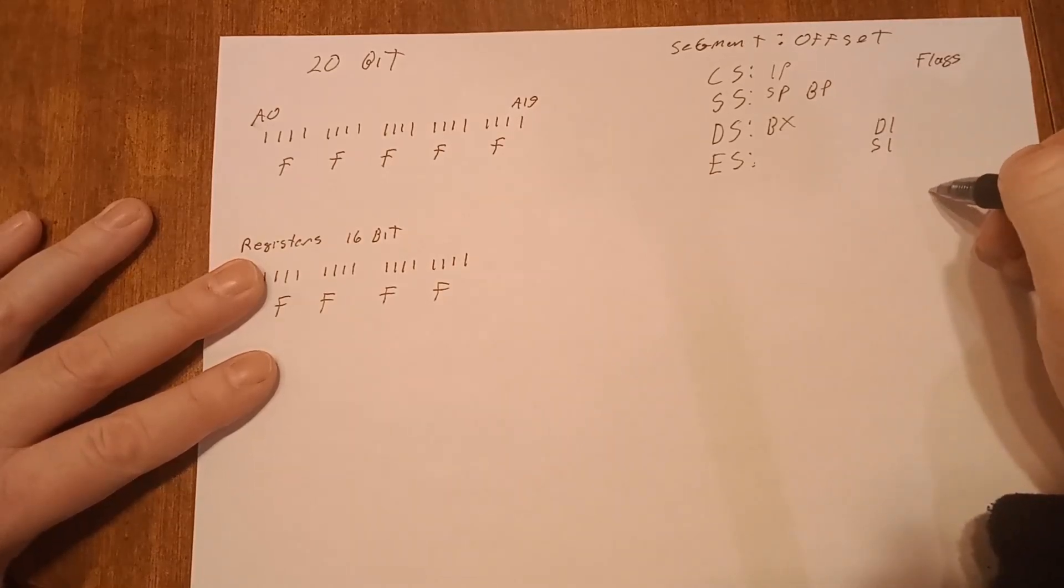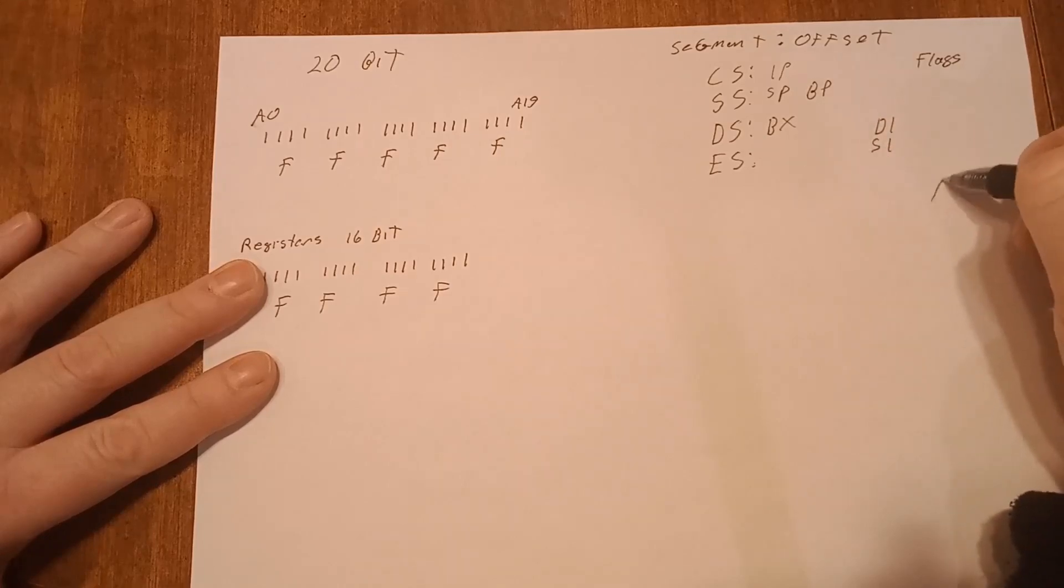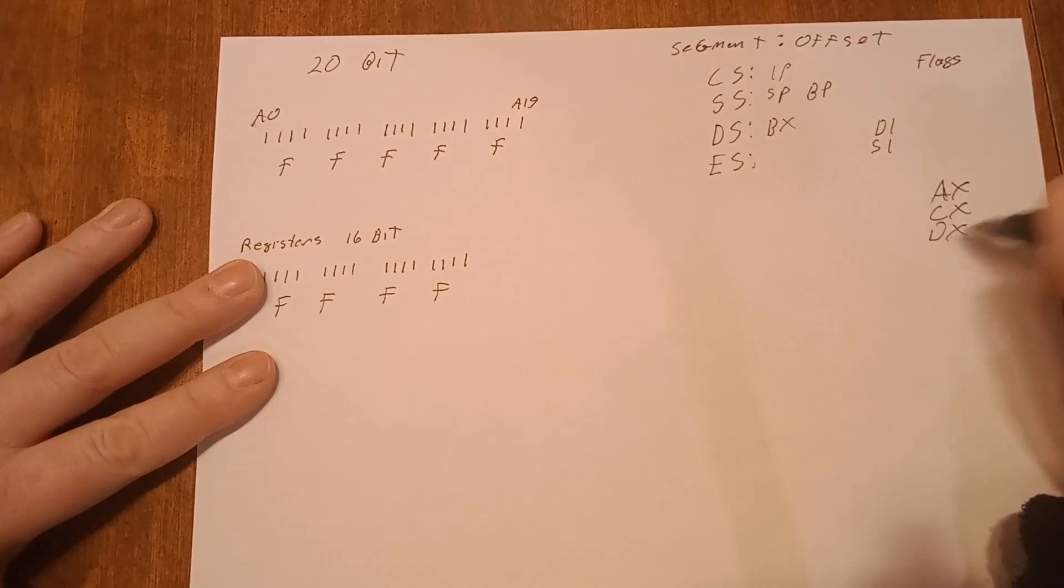The AX, we already got BX, so CX and DX. And these are used for, these are not used for addressing.